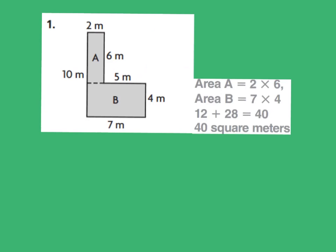Sometimes we're going to have to find the area of rectangles that are together, that are combined. So if I were to split this shape into two rectangles, we have rectangle A right here and rectangle B here. I would have to find the area of rectangle A and then the area of rectangle B and add it together to get the area of this shape.